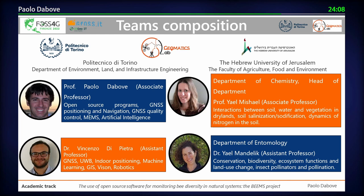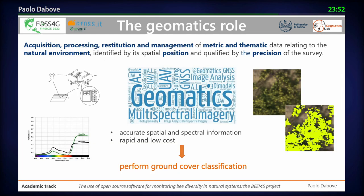Due to time constraints, I'll focus on the procedure and methodology. Following the full geomatics workflow — from acquisition through processing, restitution, and final results — we produced final maps that can be provided to stakeholders. In this picture you can see lots of yellow spots: these are maps we created to count flowers. One of the goals was to identify how many flowers are present in an area and count them at pixel level.